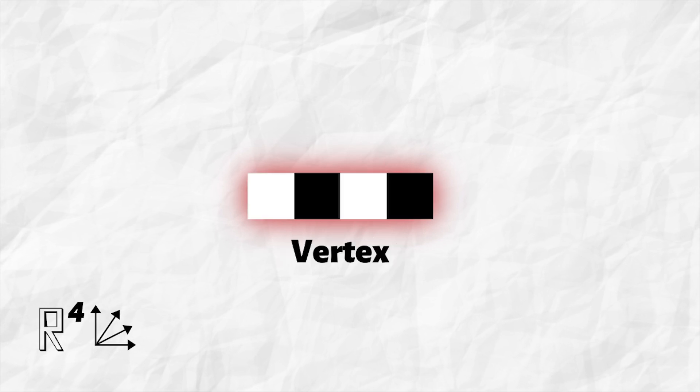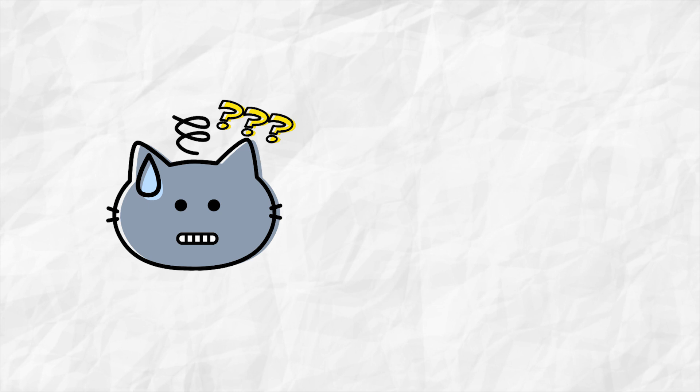This is the midpoint, this is a vertex, this is us moving on an edge. We can represent any point in, let's say, a 14 dimensional unit hypercube using 14 boxes.